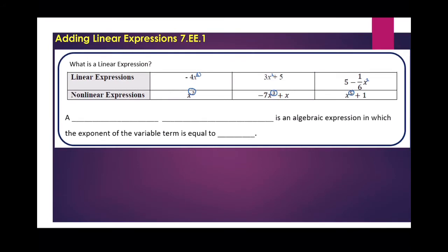So maybe you've figured it out by now. A linear expression is an algebraic expression in which the exponent of the variable term is equal to 1. If you have any other power, then you're talking about something that is not linear. It might be quadratic, parabolic, or hyperbolic — it could be a lot of different things, but it's not linear.